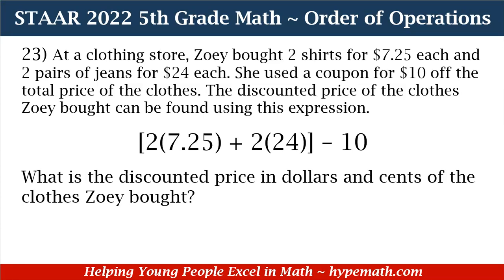Number 23 says: at a clothing store, Zoe bought two shirts for $7.25 each and two pairs of jeans for $24 each. She used a coupon for $10 off the total price of the clothes. The discounted price of the clothes Zoe bought can be found using this expression: in brackets, 2 times 7.25 plus 2 times 24, close bracket, minus 10. What is the discounted price in dollars and cents of the clothes Zoe bought?